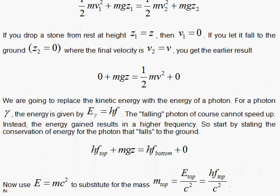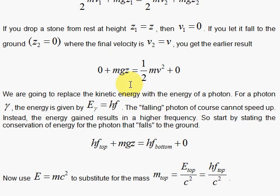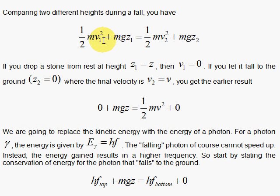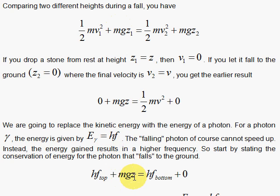We have all of the potential energy here becomes kinetic energy, and we have the result that we had earlier. When we apply this to light, as we said, light does not speed up, so we replace the kinetic energy formula with the energy for a photon. Energy for a photon is the Planck constant times the frequency. So our falling photon, or photon that's moving down, will have an energy change. You have the energy at the top. This is analogous to your one-half mv1 squared. You have the energy at the top plus the potential energy at the top is equal to the energy of the photon at the bottom plus the potential energy at the bottom.